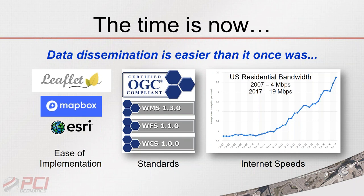Internet speed has been steadily increasing, making consuming web maps a much more pleasant experience. Average residential bandwidth in the US was about 4 megabits per second in 2007 and is now approaching 20 megabits per second. These factors together make it easy to publish data in a standard way and deliver a high-quality web mapping experience.